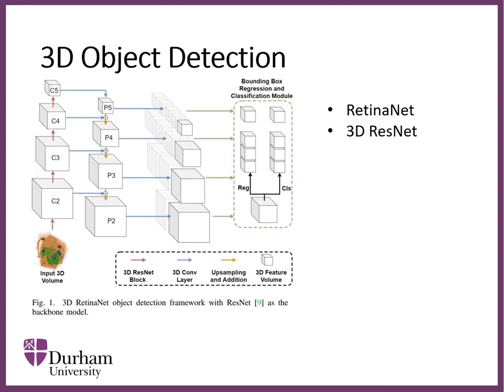We use one of the most successful object detection frameworks, RetinaNet, and adapted it to 3D scenarios. As shown in the figure, given a 3D CT volume as input, 3D ResNet blocks are used to extract multi-scale features. The features are aggregated for class prediction and bounding box regression in the final layers.